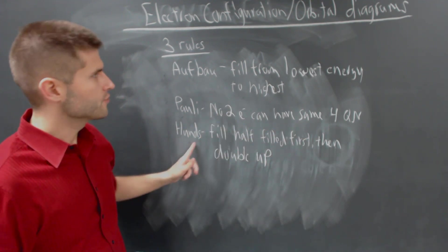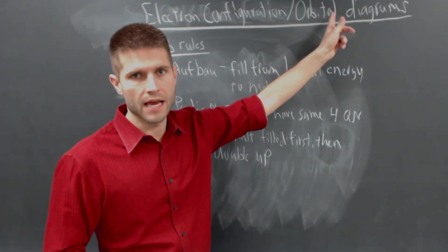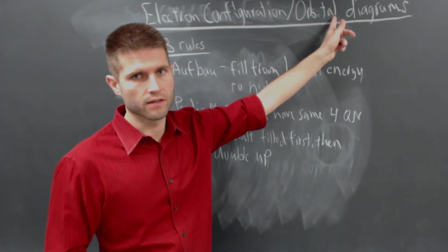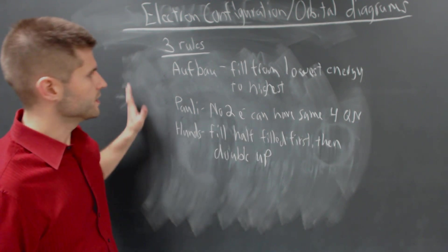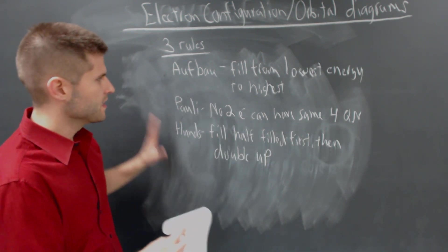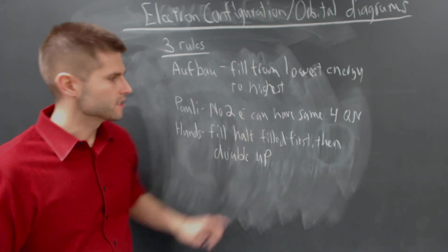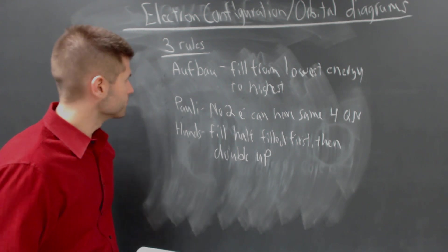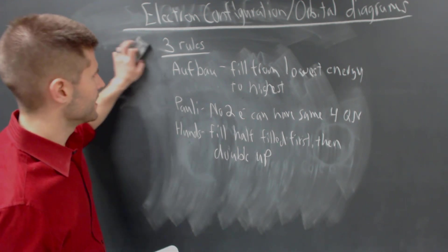Really, Hund's Rule applies to the orbital diagrams and not the electron configuration. So these are our rules, these are our guidelines. I'm going to erase this and we're going to start by showing some examples.